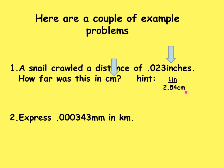We can express the conversion factor as 1 inch per 2.54 centimeters, or equivalently 2.54 centimeters per inch. In the second problem, we also have a given value and its unit: 0.000343 millimeters. We're going to convert that into kilometers, which is the desired unit in the answer.